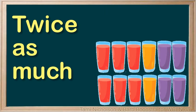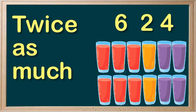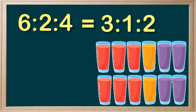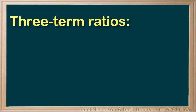If you wanted to have twice as much punch, you would use six glasses of strawberry juice, two glasses of orange juice, and four glasses of grape juice. The ratio would be 6 to 2 to 4, which is equal to 3 to 1 to 2.